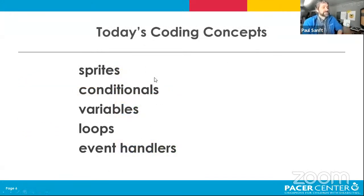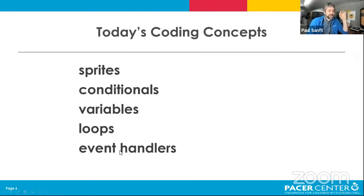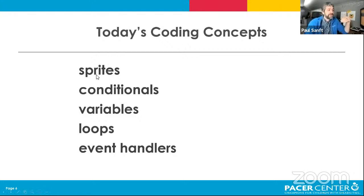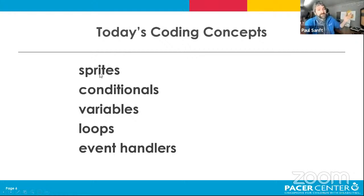These are the five things we're going to talk about in terms of coding: sprites, conditionals, variables, loops, and event handlers. If you have no idea what those things are, that's okay - we're going to learn what each of those things are today through making a video game. The game we make will utilize all five of these concepts. If you get one of them down, call that a success; if you get all five, fantastic.